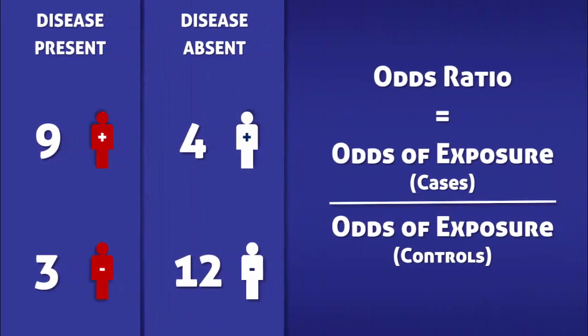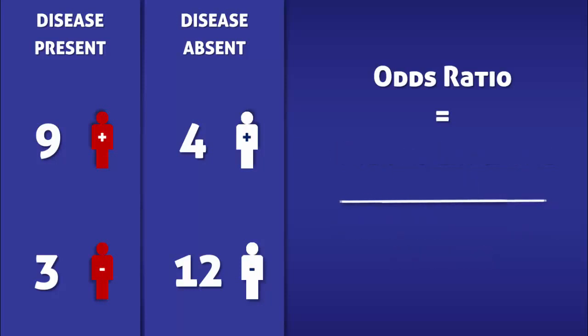Now we can calculate the odds ratio by dividing the odds of exposure amongst cases by the odds of exposure amongst controls. The odds of exposure amongst cases is calculated by dividing a over c, while the odds of exposure amongst controls is calculated by dividing b over d.